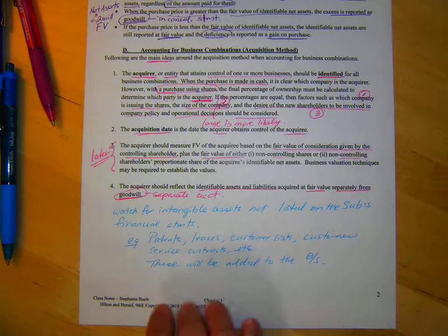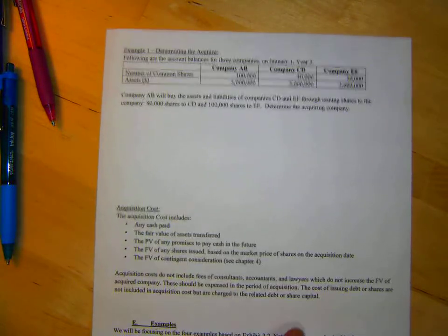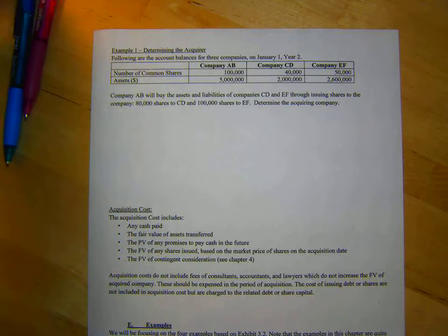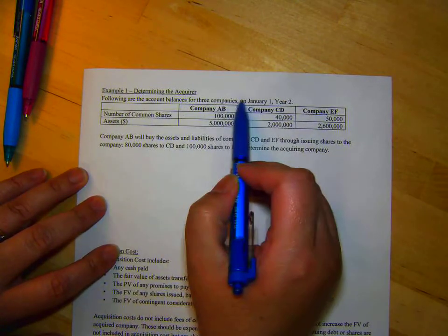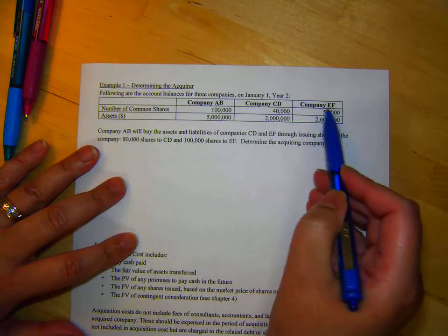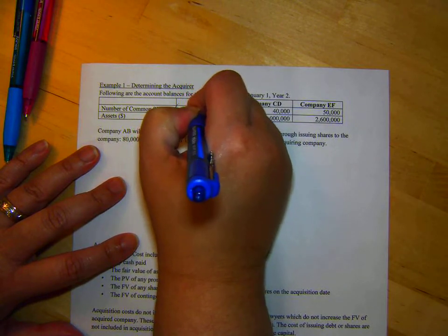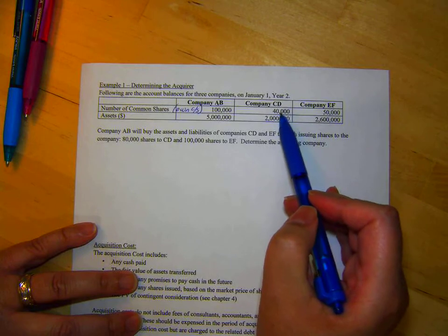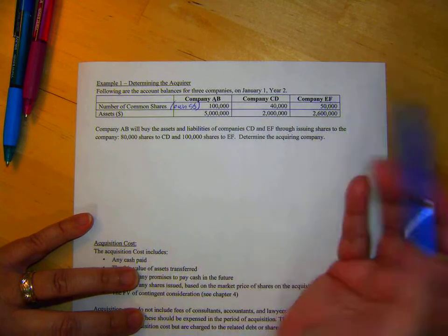On page three, remember we said if you buy shares, you have to figure out who the acquirer is? I'm going to show you an example of what I mean with that. So, here are account balances for three companies on January 1st, Year 2. Company AB, Company CD, Company EF. Now, the number of common shares, and that's of their own common shares, is 100,000, 40,000, and 50,000. So these are CD shares, these are EF shares. And here's the size of the company based on assets.